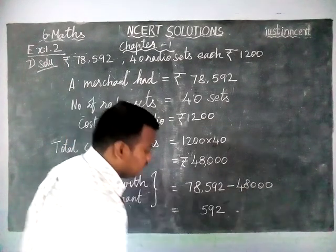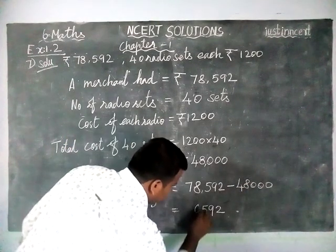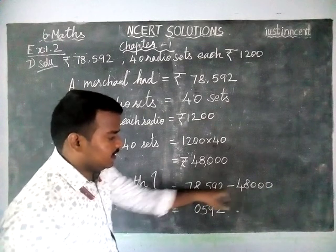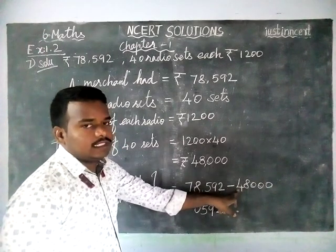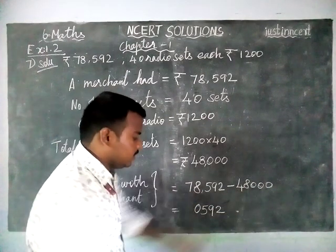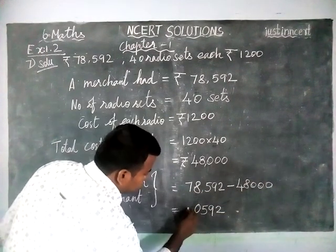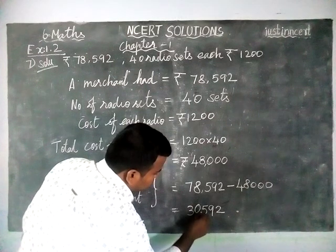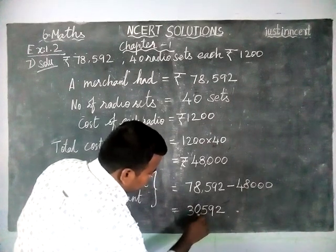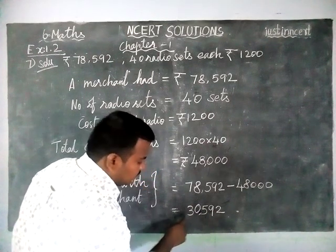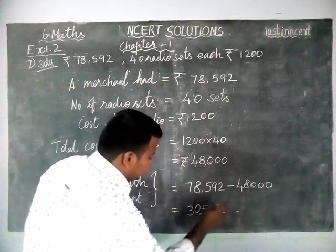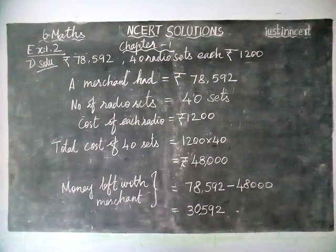8 minus 8 is equal to 0. The ten-thousands place digit is 7, and the ten-thousands place of 48,000 is 4. So 7 minus 4 is equal to 3. Therefore the answer is 30,592.